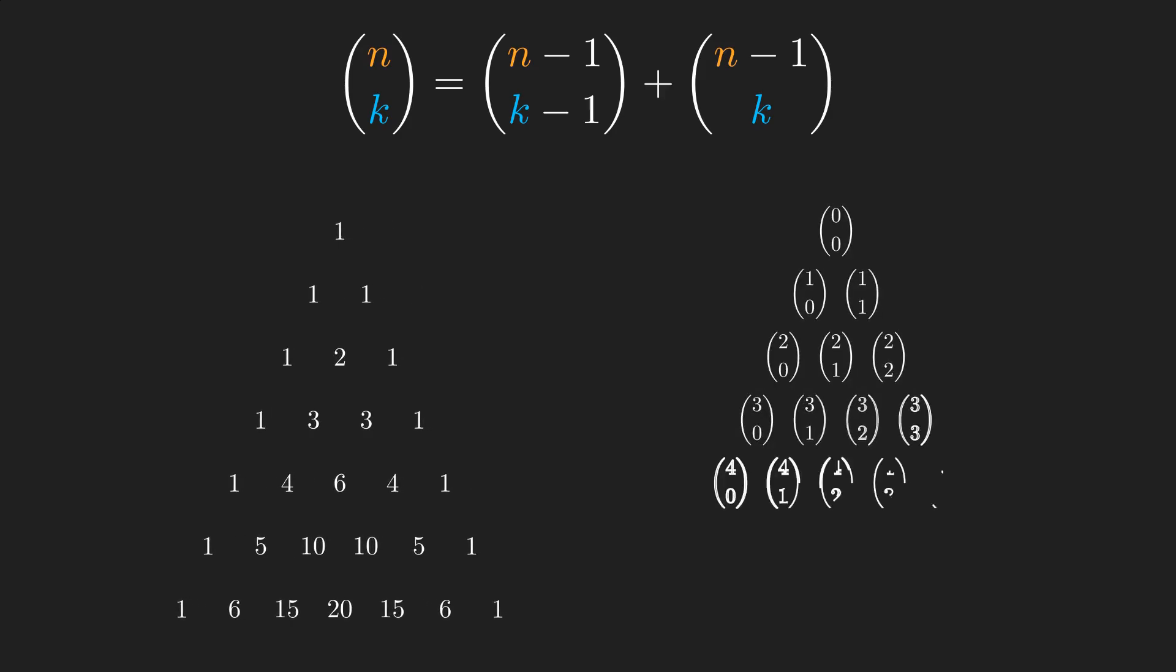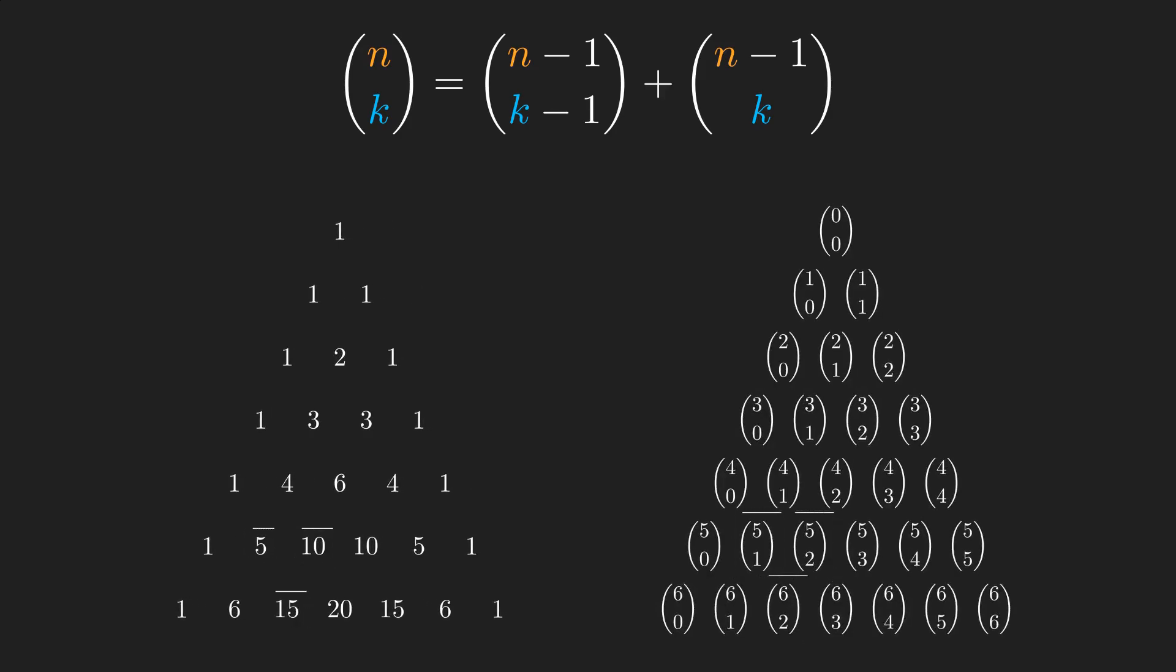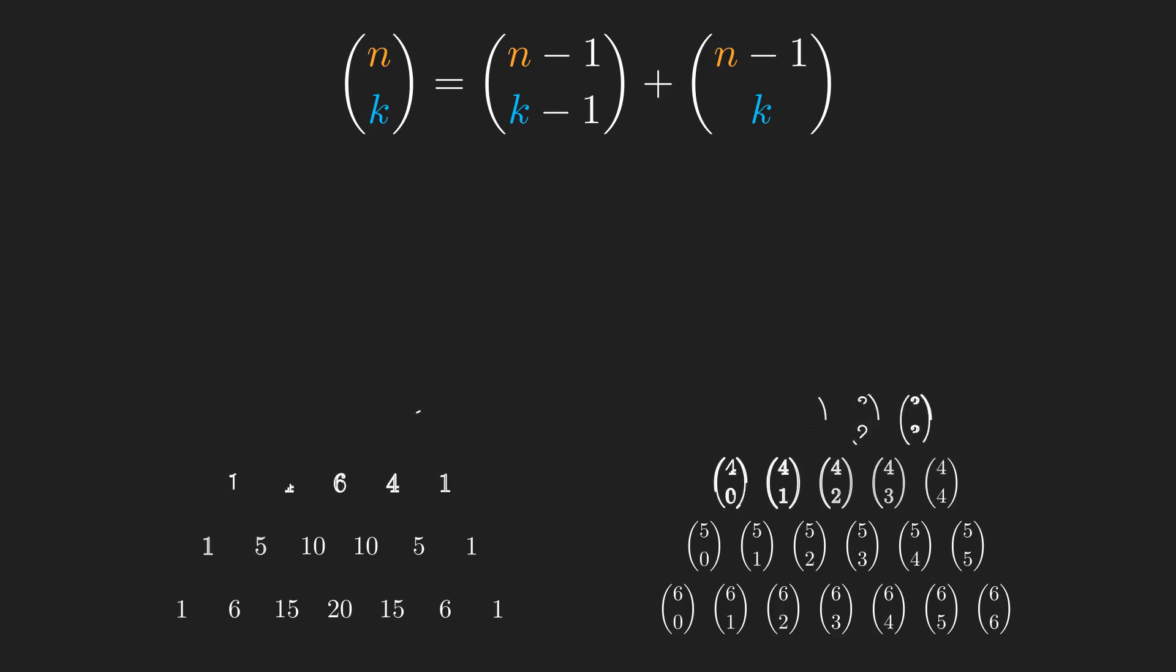Before diving into the main problem, let's look at an example of double counting. This is Pascal's identity and we want to prove it using double counting. You might have seen this identity in Pascal's triangle. In this triangle, the sum of any two adjacent numbers in a row is equal to the number directly below them. Here's another representation of Pascal's triangle, where you can clearly verify Pascal's identity.